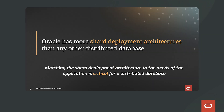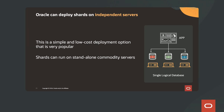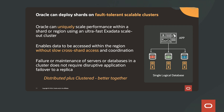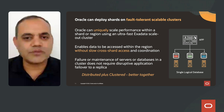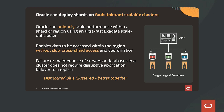Oracle has more shard deployment architectures than any other distributed database. Oracle can be deployed on independent servers — a simple, low-cost deployment option that is very popular — where shards run on standalone commodity servers. Oracle can also deploy shards on fault-tolerant scalable clusters, and can uniquely scale performance within a shard or region using an ultra-fast Exadata scale-out cluster. This enables data to be accessed within a region without slow cross-shard access and coordination. Failure or maintenance of servers or databases in a cluster does not require disruptive application failover to a replica.